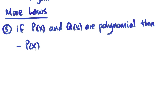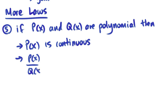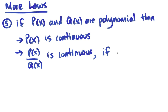First, p of x is continuous. All polynomial functions are continuous. And secondly, a polynomial function divided by another polynomial function is continuous, as long as at the point x equals c the denominator doesn't equal zero.